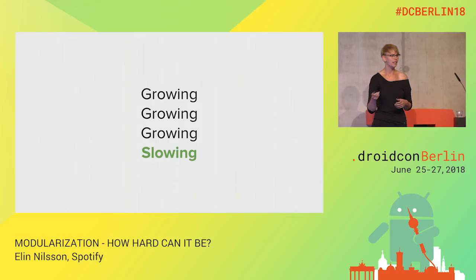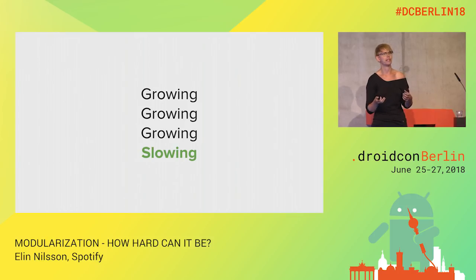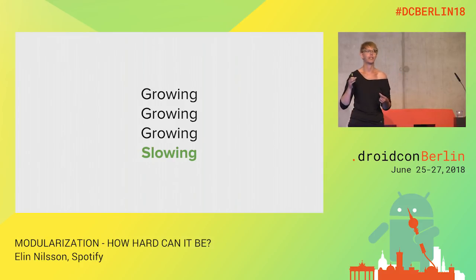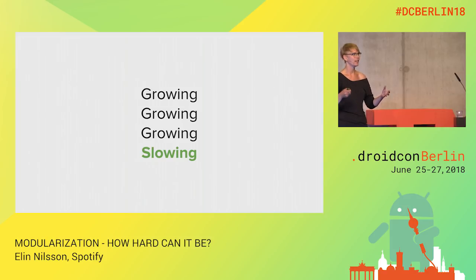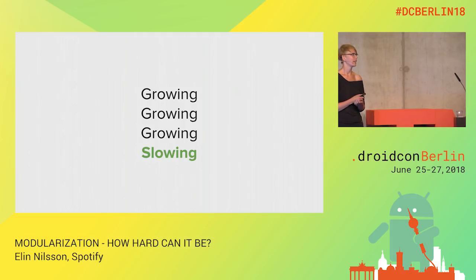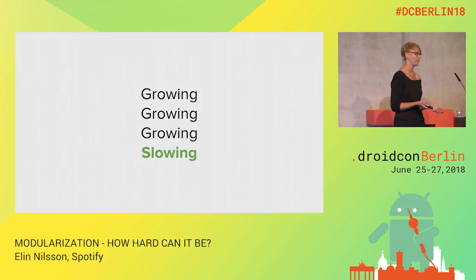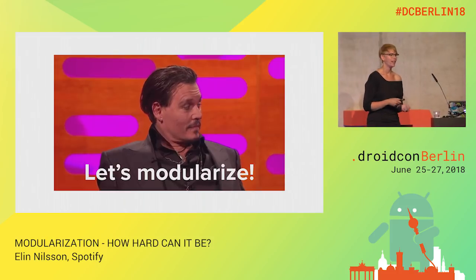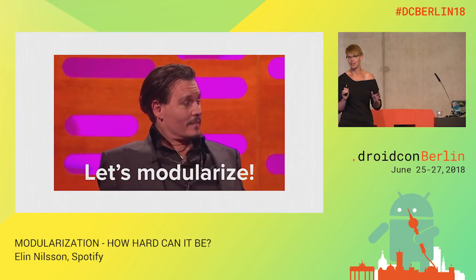That was the main reason we got started with modularization. Build times were the reason we couldn't not do it. At our scale, our build times were grinding to a halt. Had we not started when we did, we're talking hours of build times — we basically wouldn't have been able to work. So we decided: let's do this, we need to modularize.